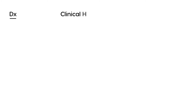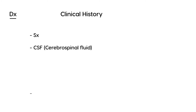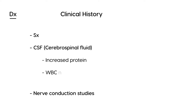To diagnose GBS, the clinical history is very important — asking the patient about recent infections that could have triggered the condition. Two key diagnostic tests are also used: analysis of the cerebrospinal fluid (CSF) and nerve conduction studies. The classic CSF finding is elevated protein with a normal WBC count.